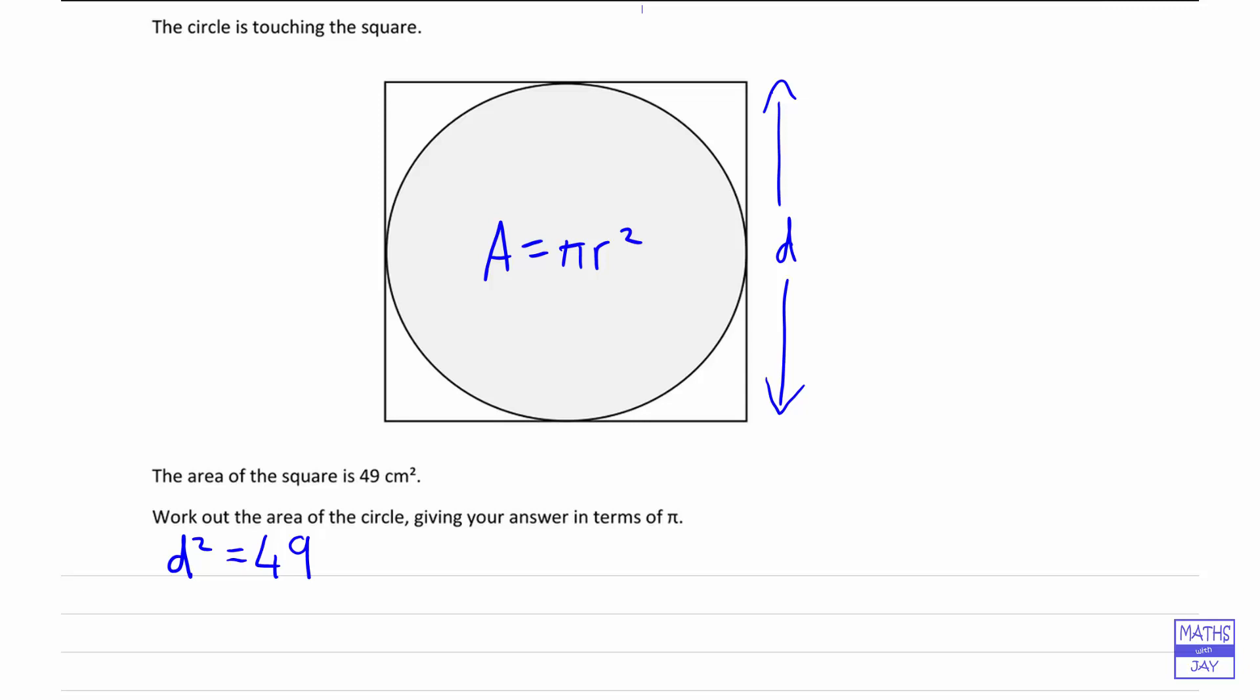So if d squared is 49, and obviously d has got to be positive, so d is going to be the square root of 49, so that's going to be 7. And the radius of a circle will be half of that, so we could either write that as 3.5 or 7 over 2.